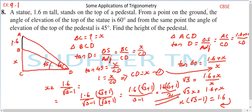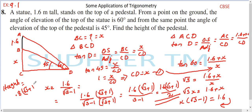So the height of the pedestal x is equal to 0.8 times (root 3 plus 1).